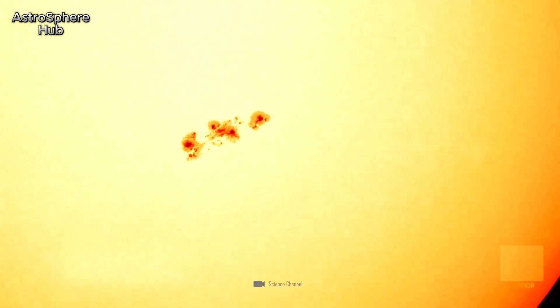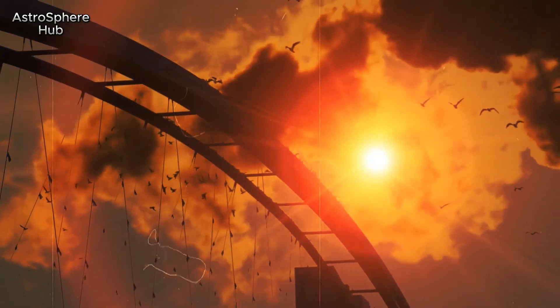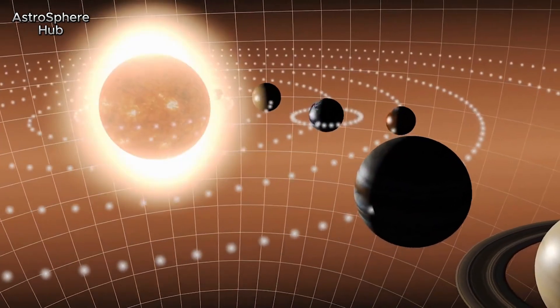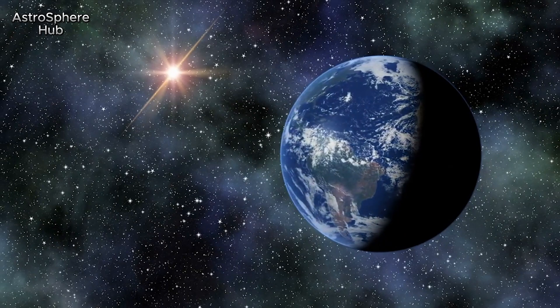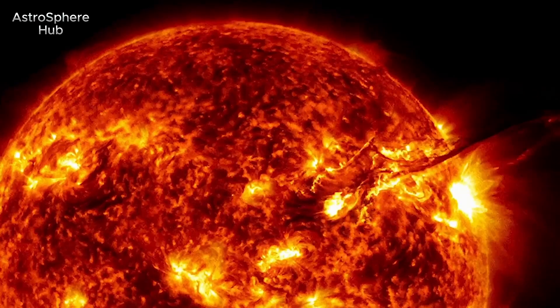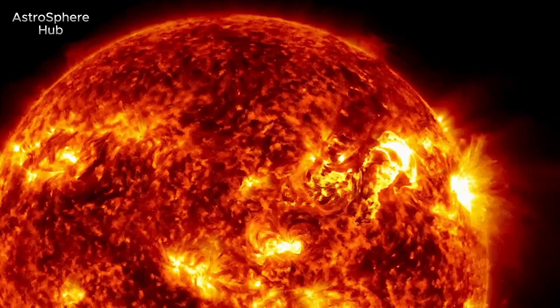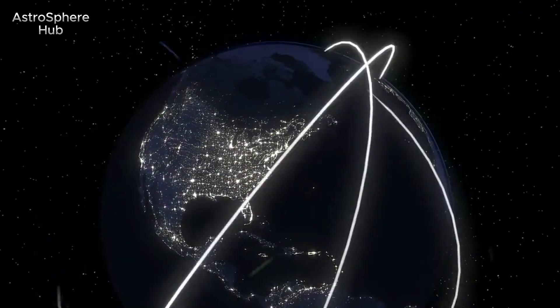We currently do not know when and where new spots will appear, although we can predict the events inside the sun to some extent. Our sun is by and large unpredictable. Just as a storm can brew on Earth within a very short time, so it is on the sun.